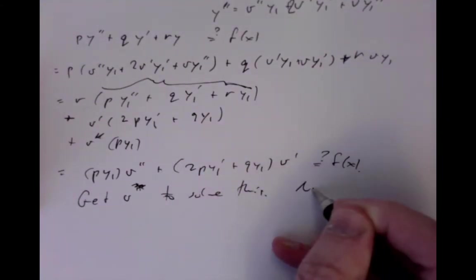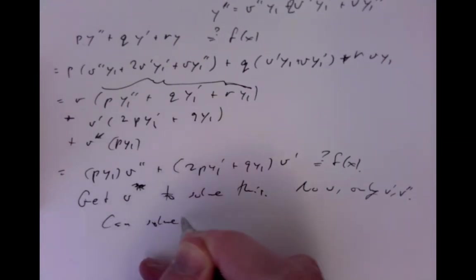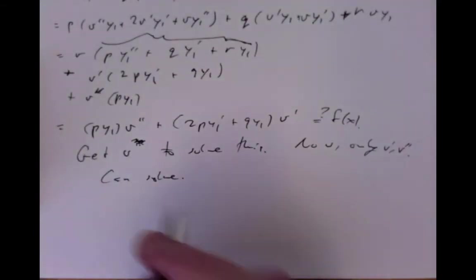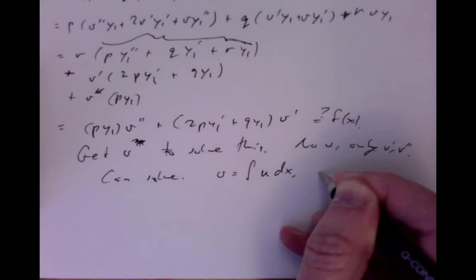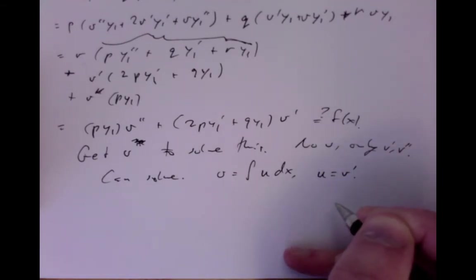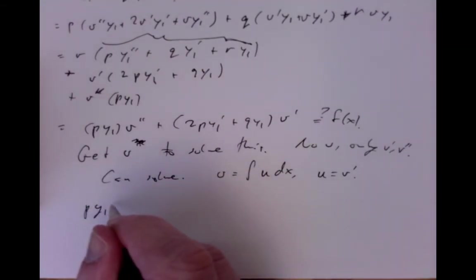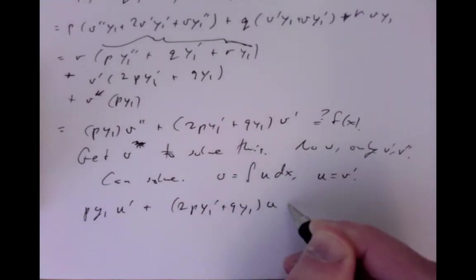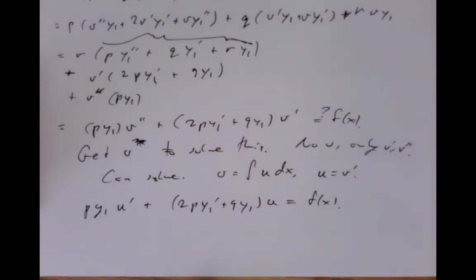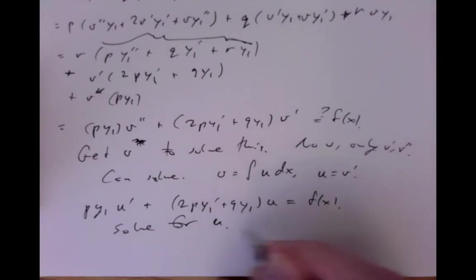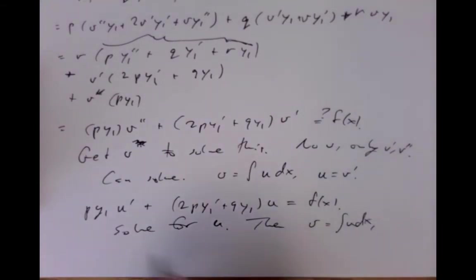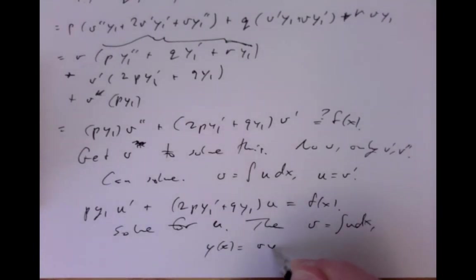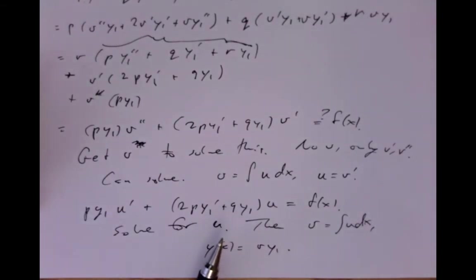This equation has no v, only v' and v''. So we can solve it by writing v = ∫u dx, so u = v'. Plugging in gives p·y1·u' + (2p·y1' + q·y1)·u = f(x), a first-order ODE we solve using integrating factors. Then v = ∫u dx, and y = v·y1.